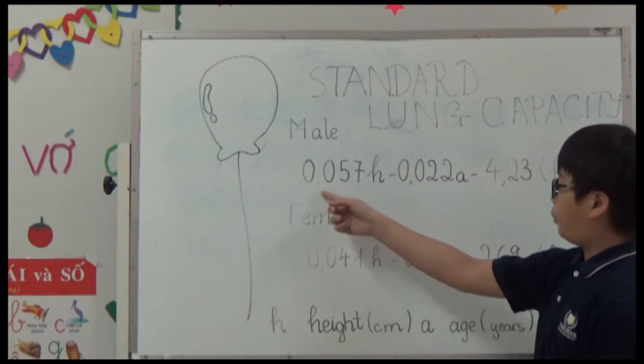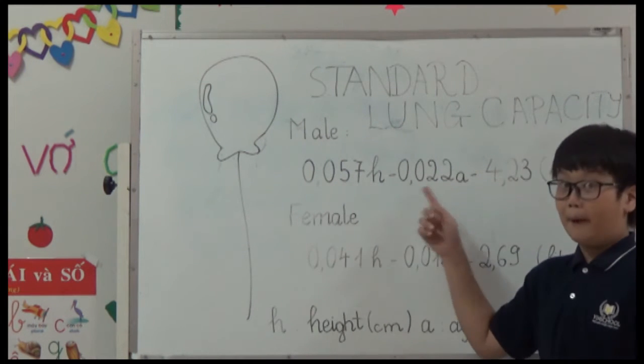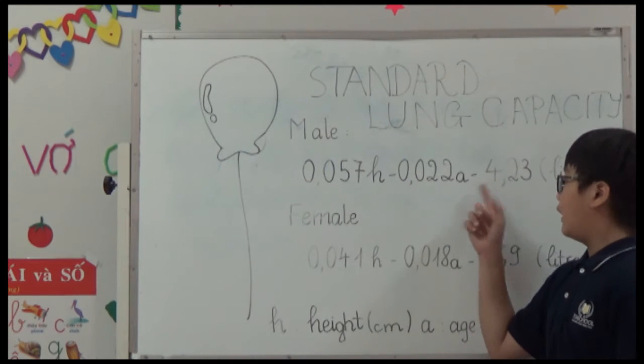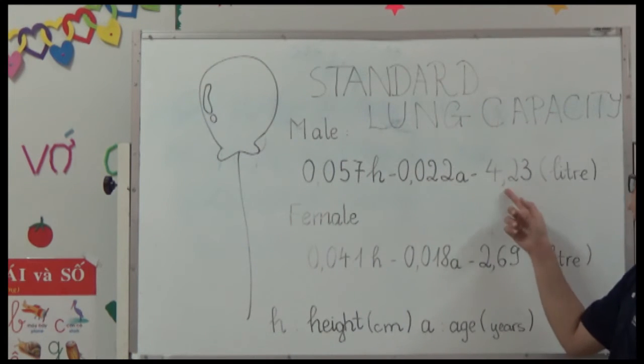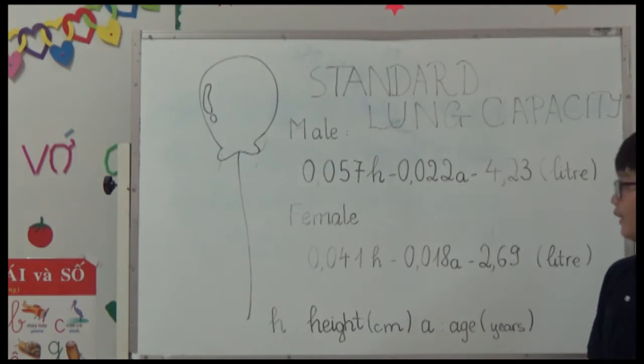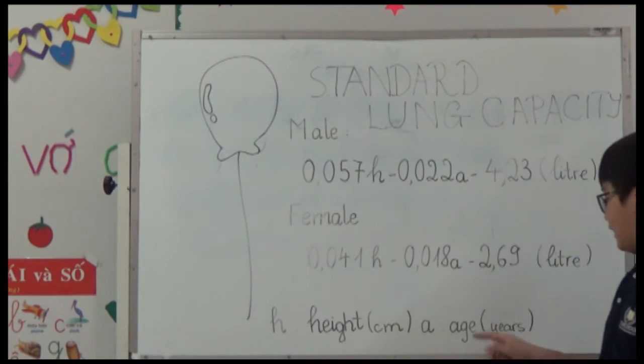Which is 0.057H minus 0.022A minus 4.23, in which H is height and A is age.